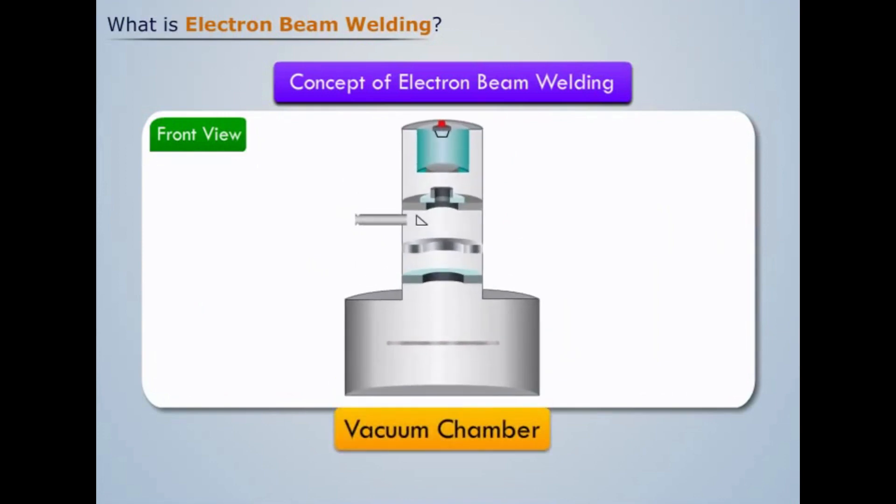Now let us consider an electron gun placed at the top of the vacuum chamber. We will use this electron gun as the cathode and below it we install an anode, a positioning diaphragm, and an electromagnetic lens.